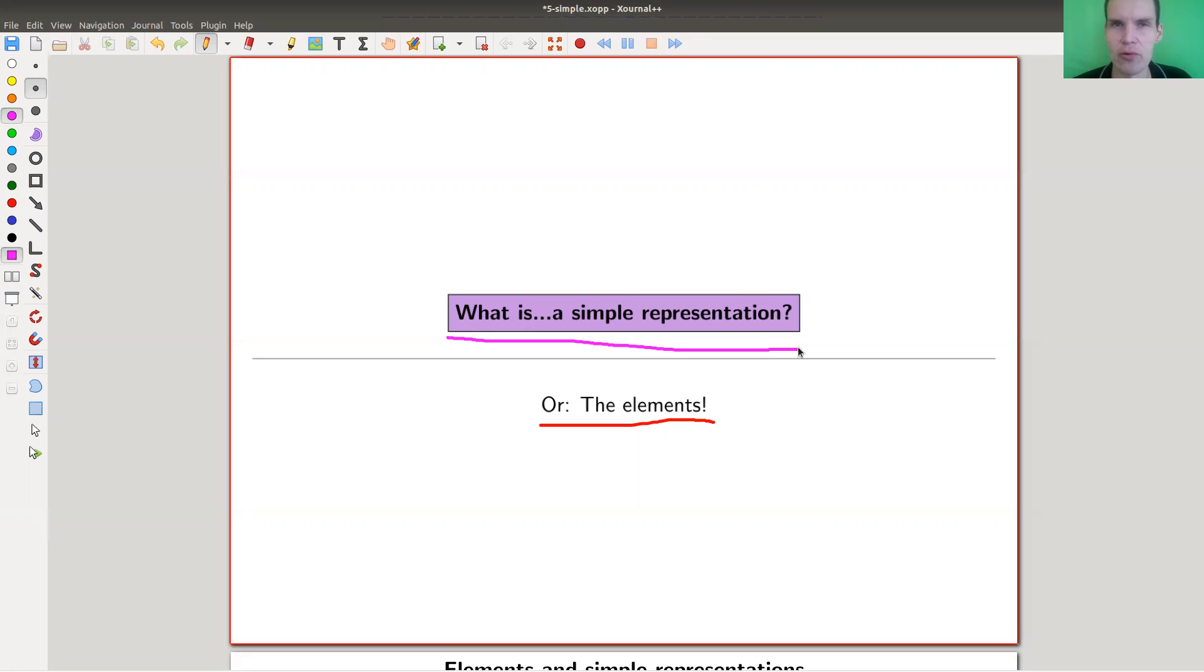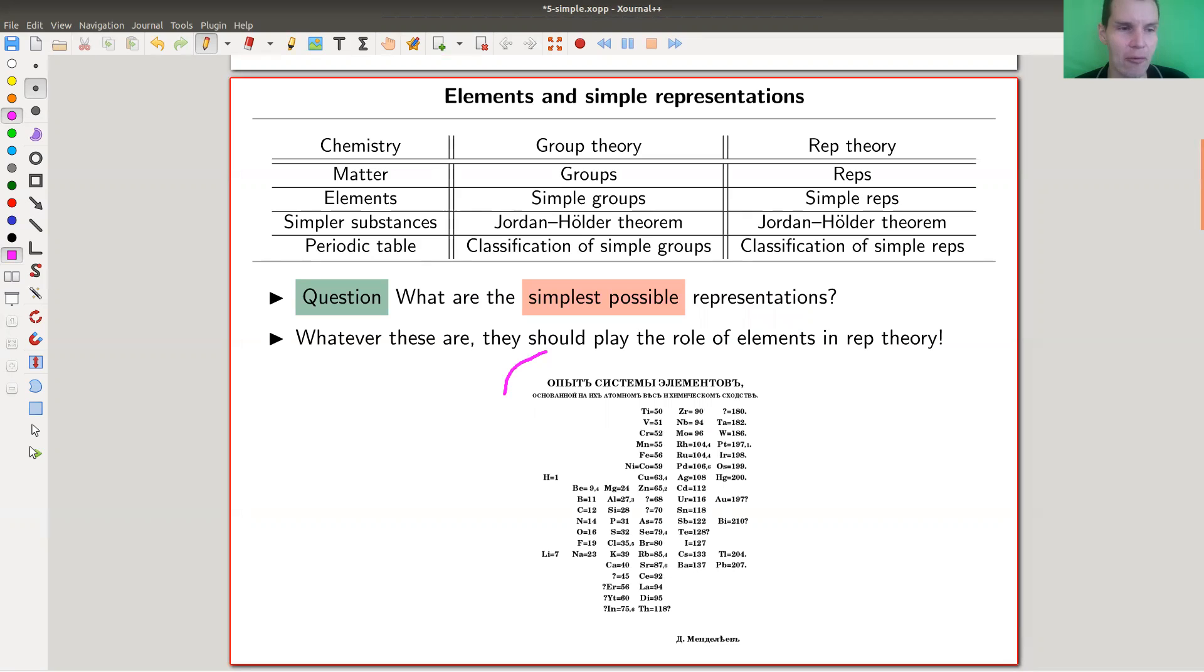That's why I prefer simple. And by the way, I will also say just simples sometimes instead of simple representations, just because it's even shorter. So simples are the elements. So here's the old periodic table, the first periodic table of elements. It doesn't quite look like a periodic table as we are used to, but you can already see some of the usual patterns here.